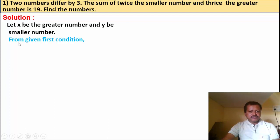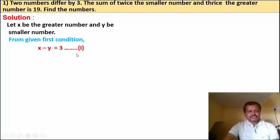From the first condition: two numbers differ by 3, meaning the difference between the two numbers is 3. So we write x minus y is equal to 3. That is equation number 1.